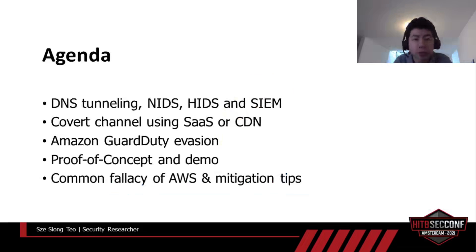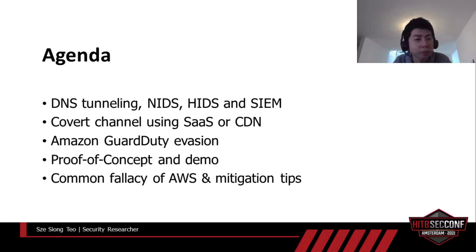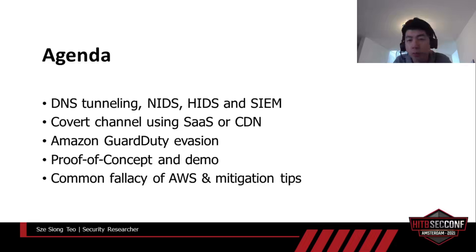Here's the list of items I'm going to talk about today. We will start with an overview of DNS tunneling, network IDS, host-based IDS, and SIEM. Then we will explore improved covert channel techniques that make use of popular cloud services. After that, we will look at how Amazon GuardDuty works compared to IDS and SIEM, and the techniques we can use to evade detection. This is followed by a proof of concept and live demo. Finally, I'll talk about common mistakes people make when using AWS along with mitigation tips.